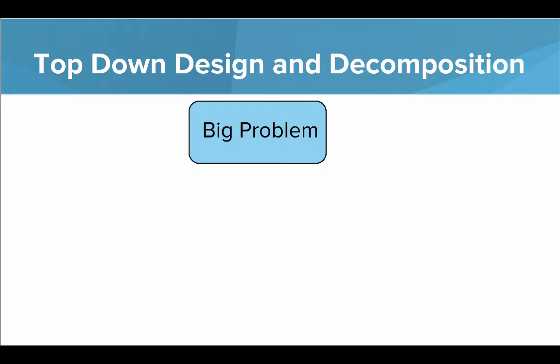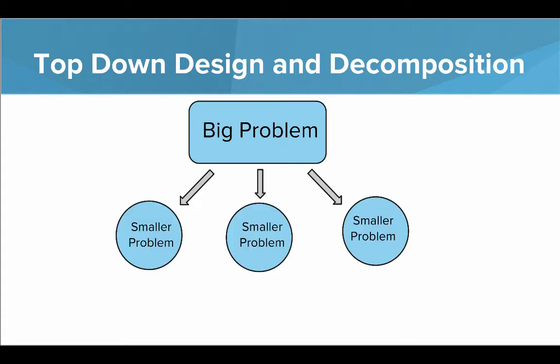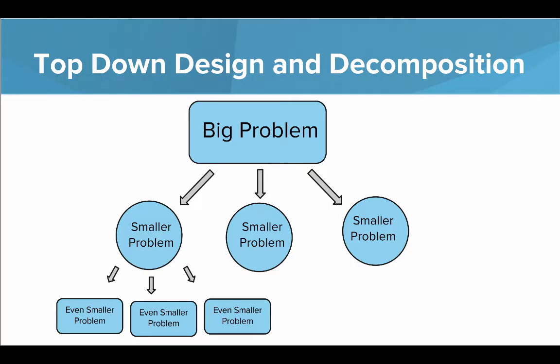Top-down design and decomposition is a strategy for taking a big problem and breaking it down into smaller parts that are easier to solve. So if you have a big problem and you don't know how to solve it, you break it into a few smaller problems, then break those into even smaller problems until they're small enough to just solve. That's top-down design.